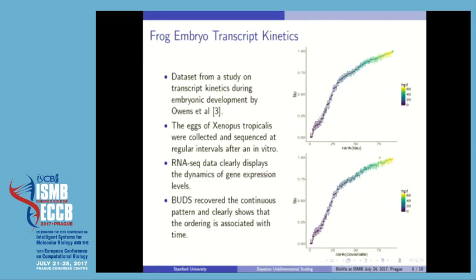The error bars denote the 95% highest posterior density interval and correspond to the uncertainties we have of the coordinate. The error bars on the second half of the plot tend to be smaller than the ones from the beginning. Another observation is that the first half of the samples vary much more than the rest of the data points.